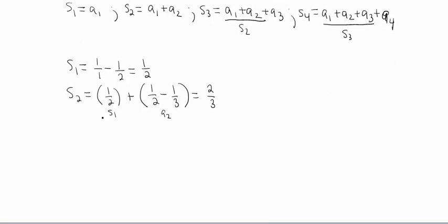To figure out s_3, I take the previous sum s_2, which was 2/3, and add a_3. Plugging 3 into the function gives 1/3 minus 1/4. I'm noticing a pattern: adding 2/3 and 1/3 gives 1, then subtracting 1/4 gives 3/4.